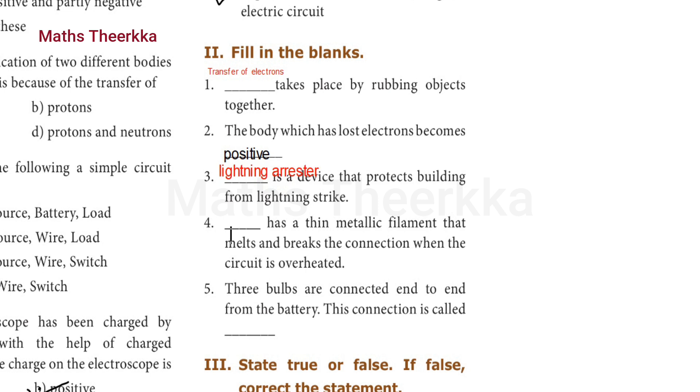Fourth one: blank has a thin metallic filament that melts and breaks the connection when the circuit is overheated. The answer is electric fuse. F-U-S-E fuse. Fifth one: three bulbs are connected end to end from the battery. This connection is called series circuit.